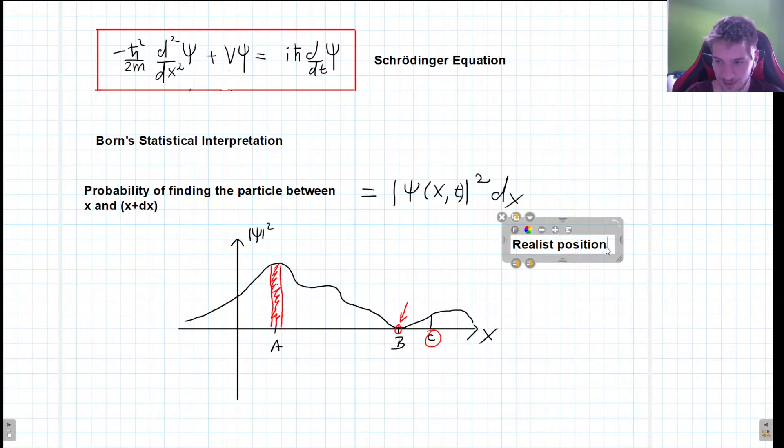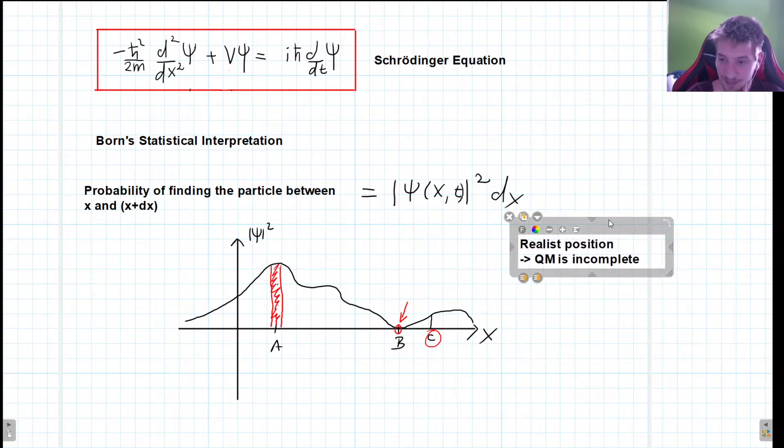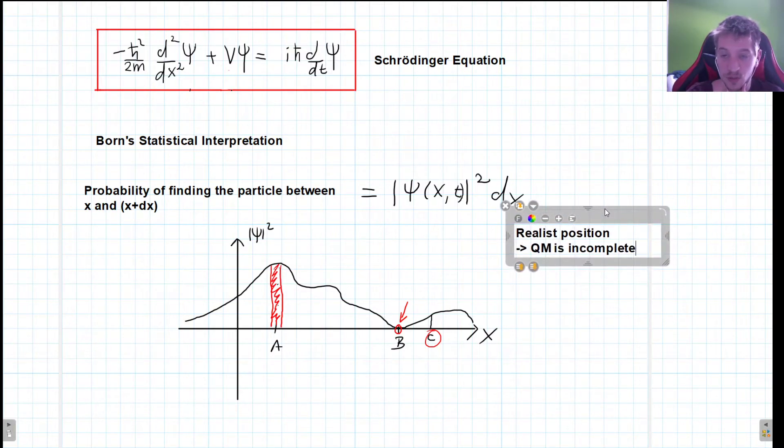So what this says is that quantum mechanics is incomplete. It says that there is just something that we don't know and if we did, we could always determine the result of an experiment. It would also eliminate this thought that the universe is random or there is some element of uncertainty that is just in the nature of our reality. That is what the realist position claims.